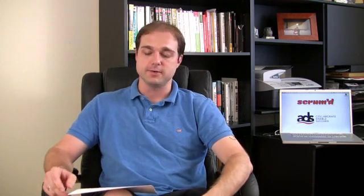The first value we're going to look at is people. This is written in the Agile Manifesto as individuals and interactions over processes and tools. So here we have to ask ourselves a few questions. The first question is: why are we building this? What is our product vision? What goal are we trying to accomplish, or what problem are we trying to solve?